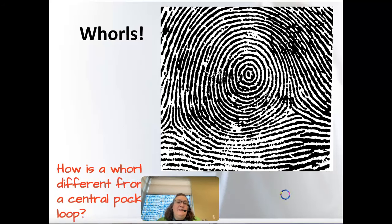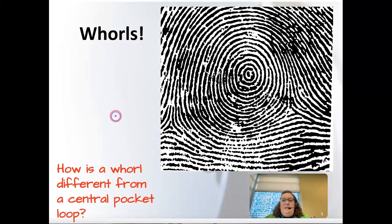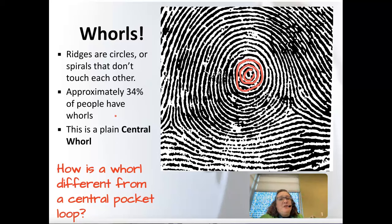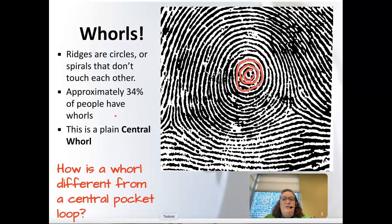A standard whorl has ridges that form circles — concentric circles, meaning evenly spaced and not touching each other. They're actual circles, not spirals like in the central pocket loop; they come all the way around and just get bigger and bigger as they go out. Approximately 34% of people have whorls, making them the second most common type. Just look for lines that don't cross over each other and you'll know you have a whorl.